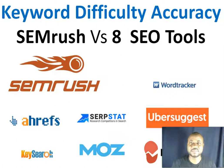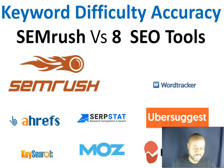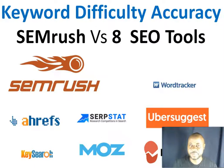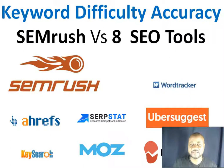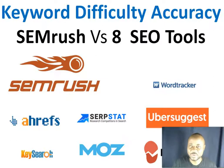In this exercise we focused more on keyword difficulty from SEMrush and eight other SEO tools. We also looked at the search volume and cost per click (CPC) of a specific keyword on a specific date. At the end of this video I will be sharing which of these SEO tools is our choice and why.